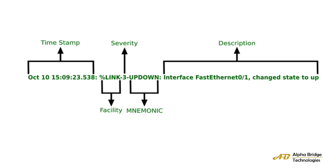Let us see an example of the syslog message format. We can see the timestamp — this message is from October 10. We can see the facility, which indicates which process generated this message. After that, we see the severity, which is 3, meaning it is an error condition. After the severity, we see the mnemonic — in this case it is 'UP-DOWN', indicating the state of the interface or switch, whether it is up or down. In the description, we see the detailed information: interface FastEthernet 0/1 has changed its state to up. In this format, we will receive syslog messages from our device and store them in the syslog server.